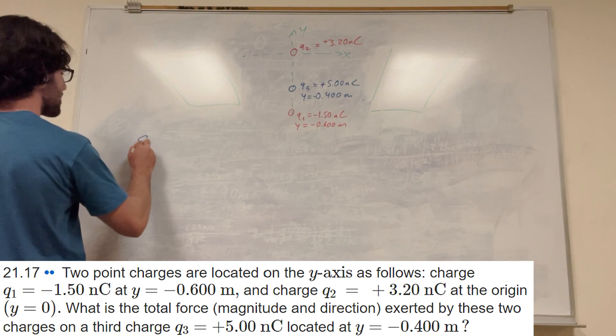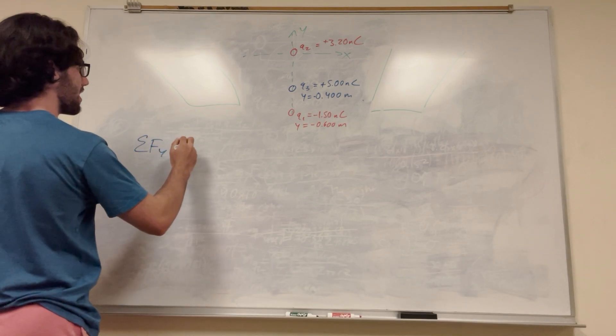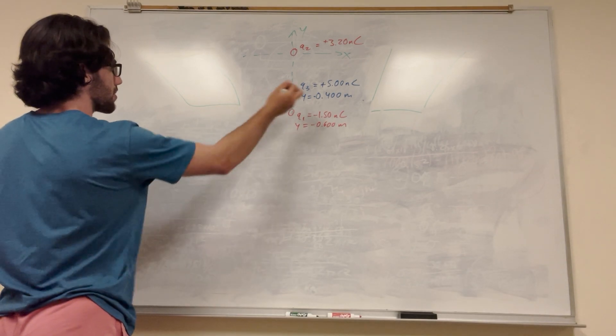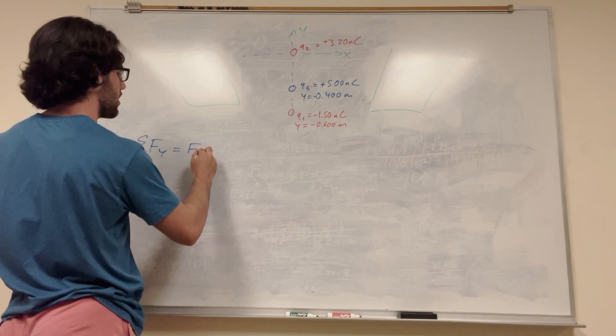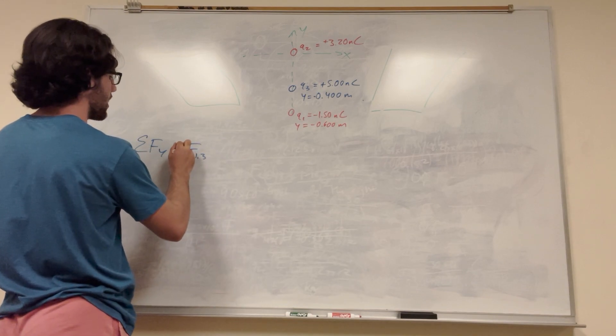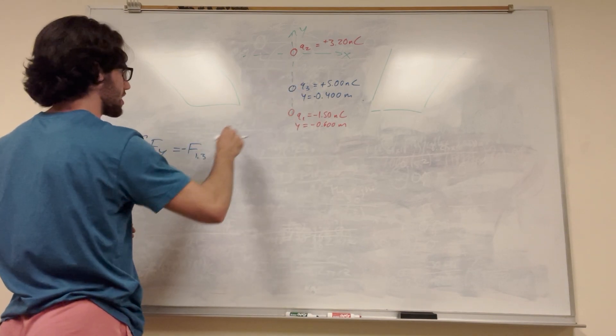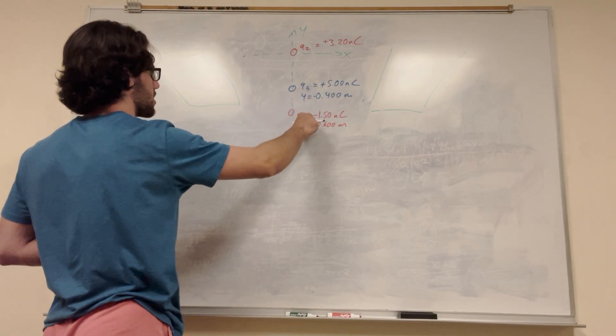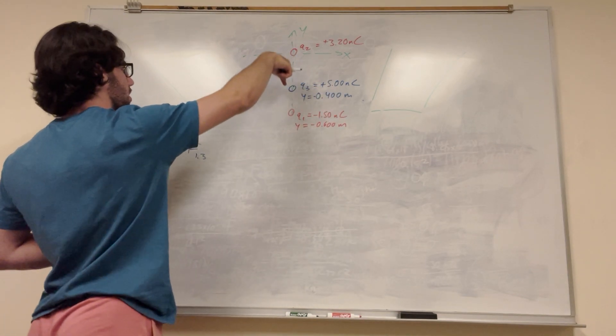So sum of the forces in the y direction is going to be the force from Q1 on Q3, which is negative because it's going to be pulling it down. This is a positive charge and this is a negative charge, so it's going to want to pull it down that way.